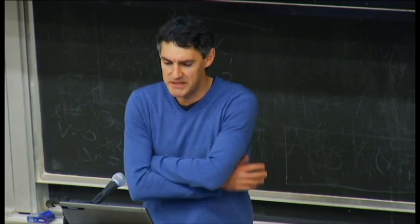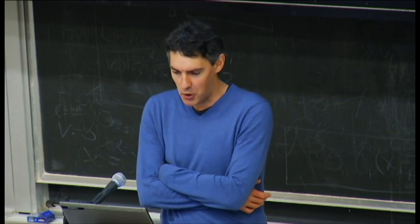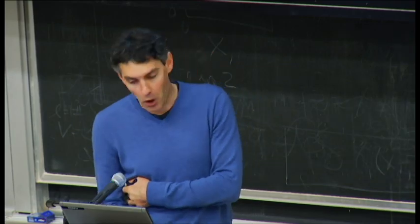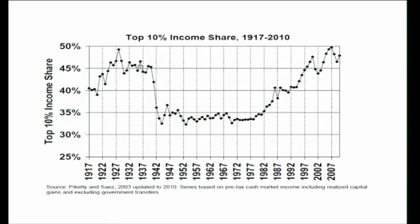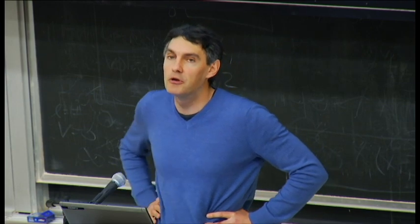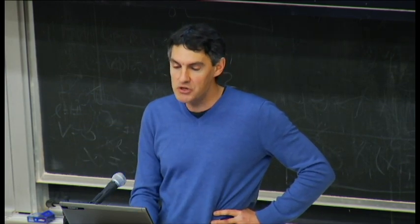This data covers almost a century and comes from data compiled with my co-author Thomas Piketty. Income concentration was high in the first part of the 20th century, with the top 10 percent earning about 45 percent of total income. It fell precipitously during World War II and in the following decades down to the low 30s. Most striking is that since the late 1970s, concentration has increased dramatically, returning to pre-WWII levels.